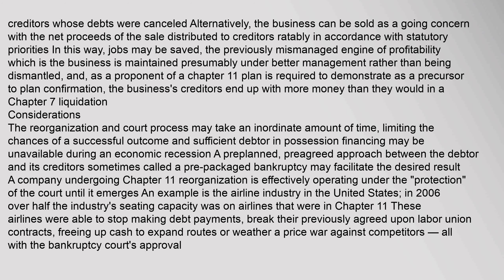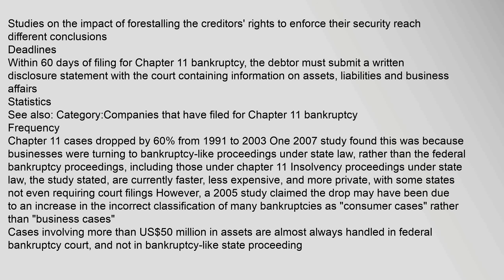A pre-planned, pre-agreed approach between the debtor and its creditors, sometimes called a pre-packaged bankruptcy, may facilitate the desired result. A company undergoing Chapter 11 reorganization is effectively operating under the supervision of the court until it emerges. An example is the airline industry in the United States — in 2006, over half the industry's seating capacity was on airlines that were in Chapter 11. These airlines were able to stop making debt payments, break their previously agreed-upon labor union contracts, freeing up cash to expand routes or weather a price war against competitors, all with the bankruptcy court's approval.